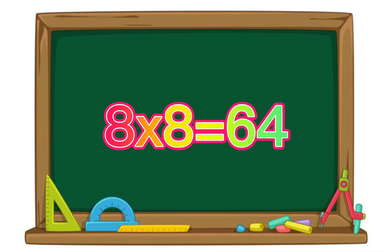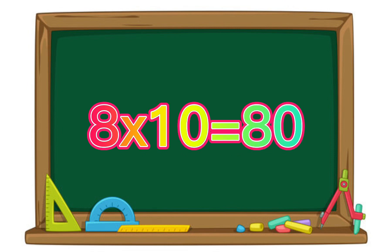8 x 8 equals 64. 8 x 9 equals 72. 8 x 10 equals 80. 8 x 11 equals 88. 8 x 12 equals 96.